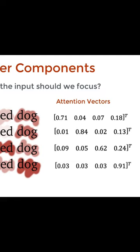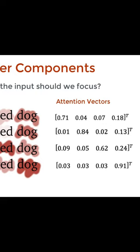For every word, we can have an attention vector generated which captures contextual relationships between words in the sentence. So that's great.